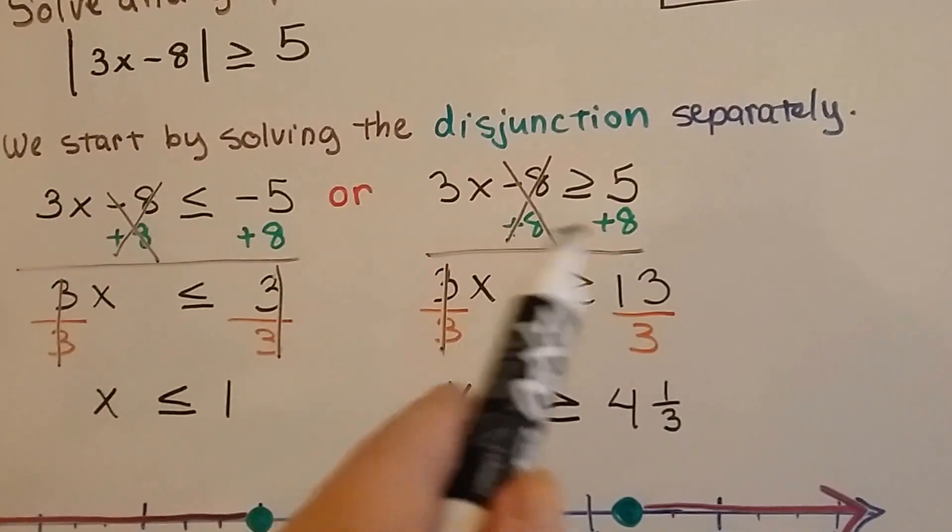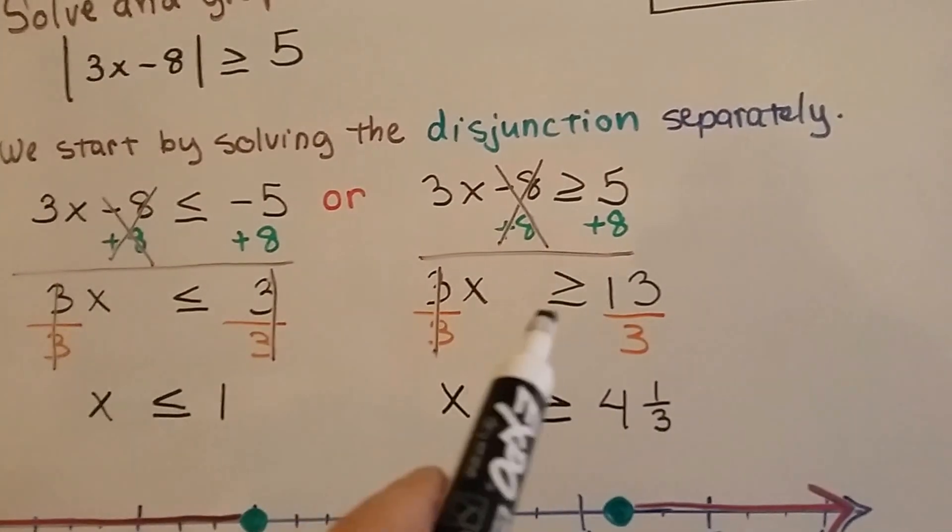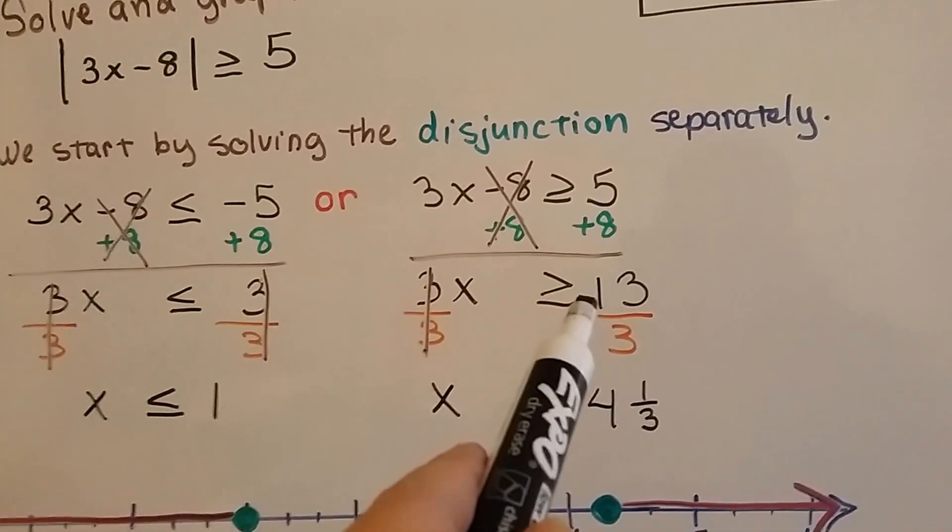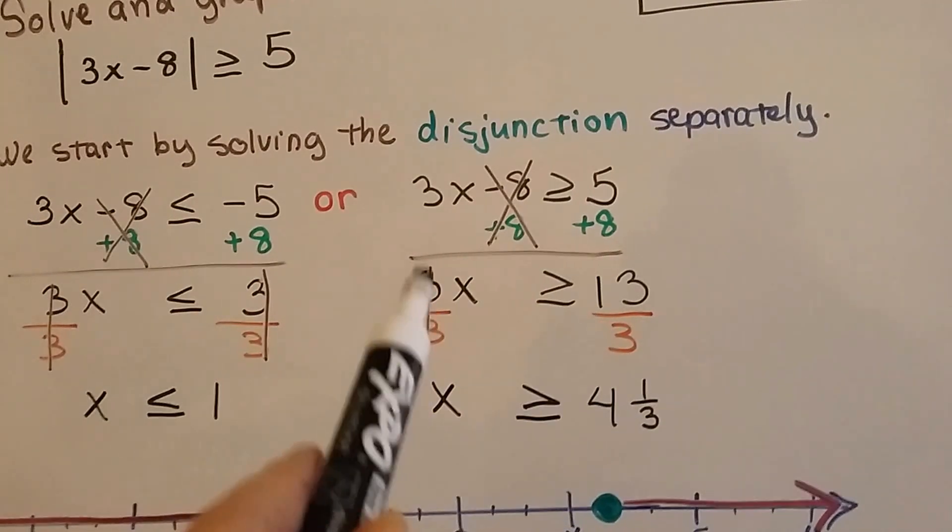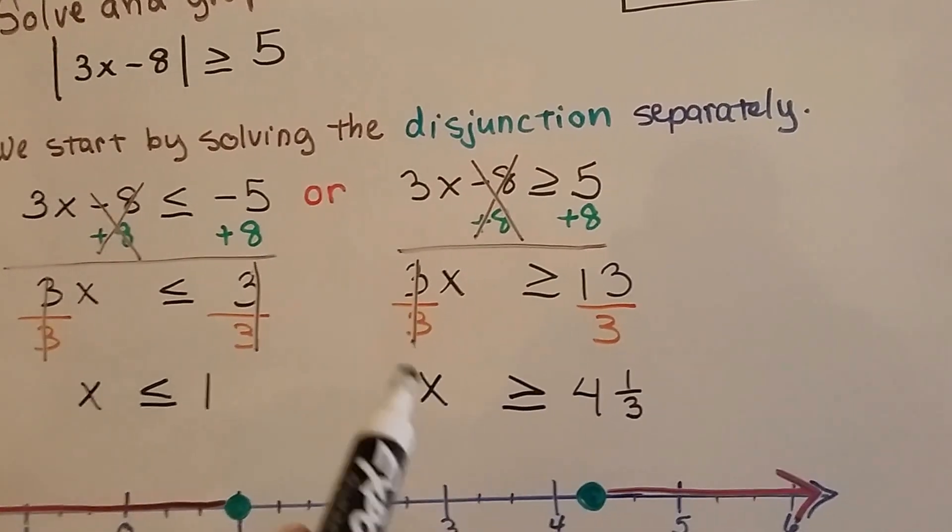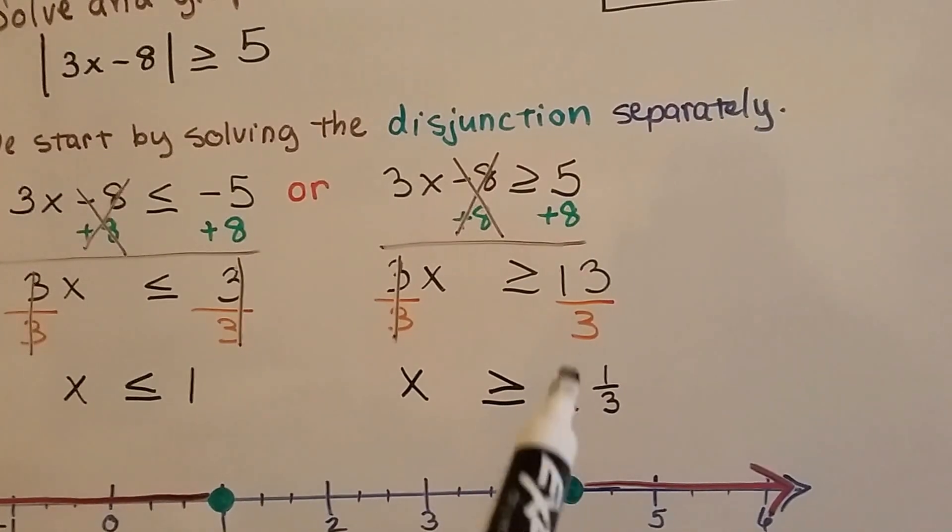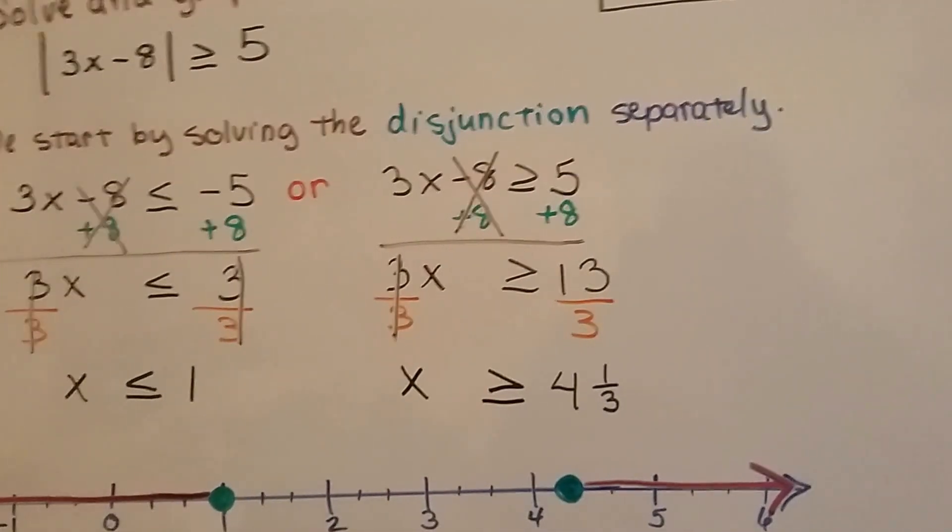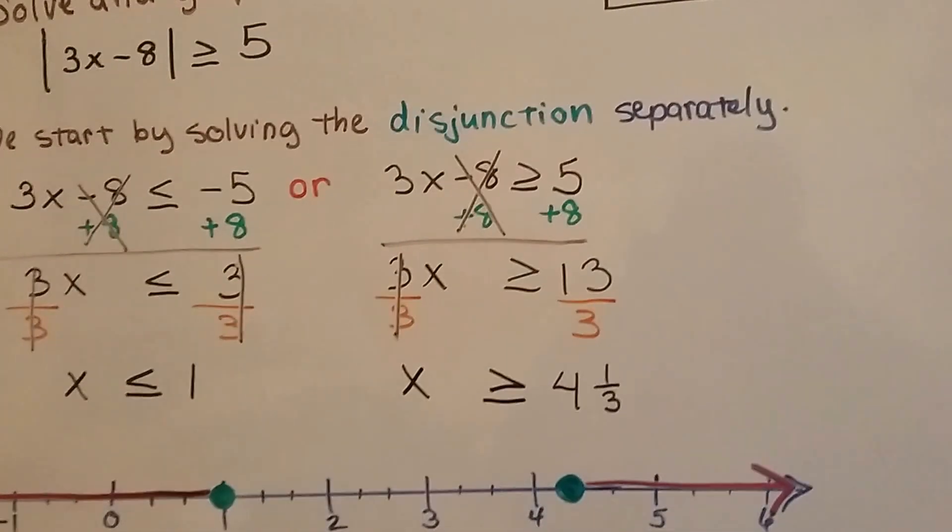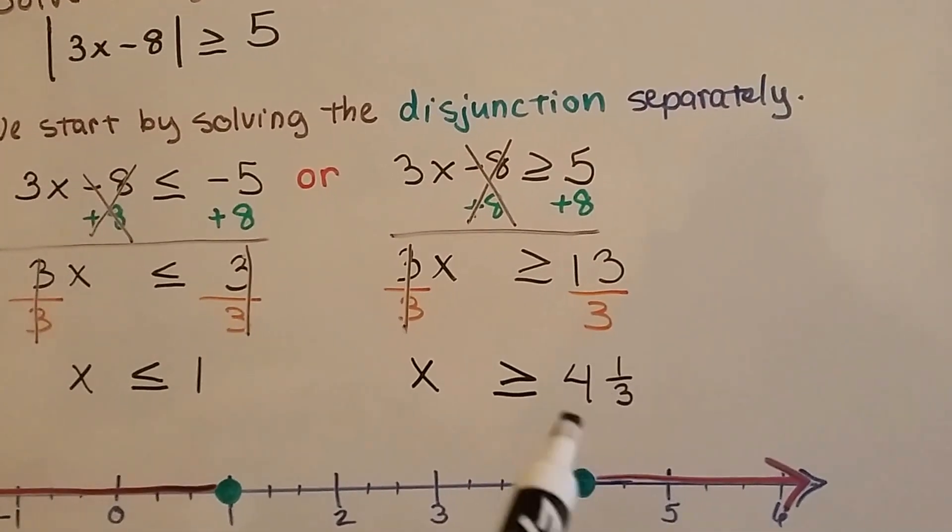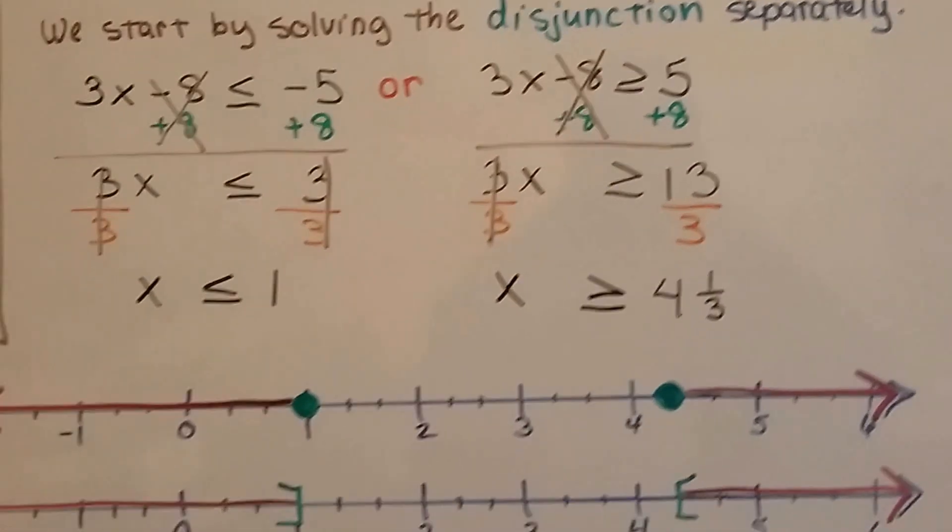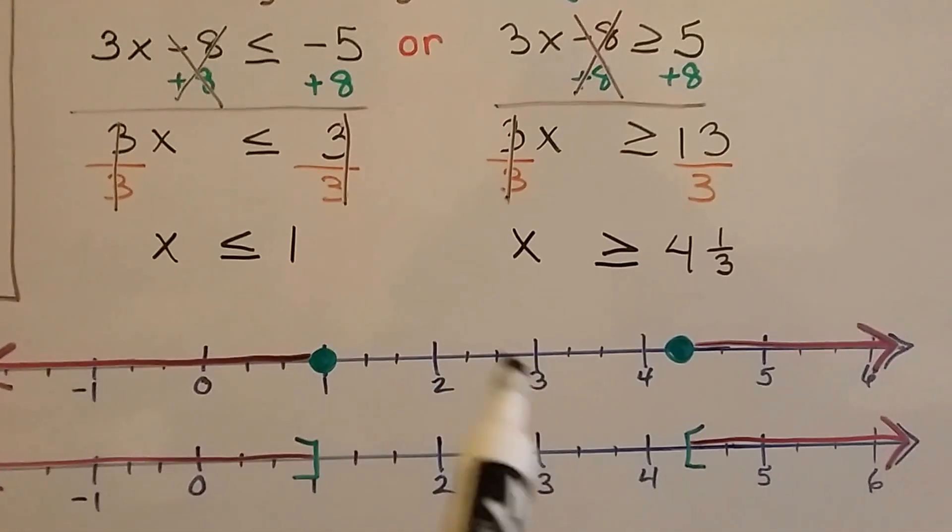We added the 8 to each side, and we got 3x is greater than or equal to 13. 5 and 8 is 13. That became our friend the invisible 1 identity property. So we got x is greater than or equal to, you can keep it as the 13 thirds if you want. You can even graph it that way, or you can simplify it like I did to 4 and a third.